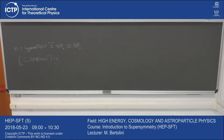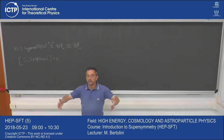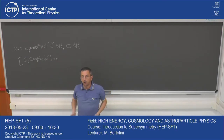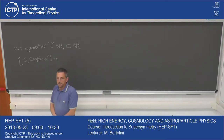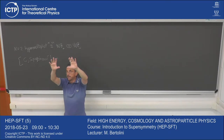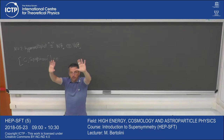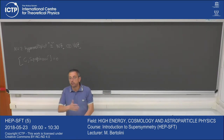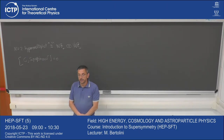The upshot is that this is why phenomenologists like N equal to 1 supersymmetry very much. No matter if and how supersymmetry is realized in nature, at low enough energy the minimal extension should be N equal to 1. There may be a larger supersymmetry at very high energy, but it should be broken somehow along the way to give a low-energy N equal to 1 theory, because it is the only one in which you can naturally accommodate Standard Model particles in supersymmetric multiplets with left and right components in different representations.